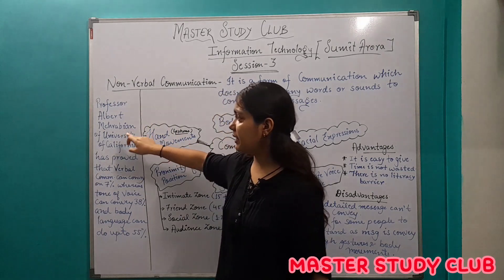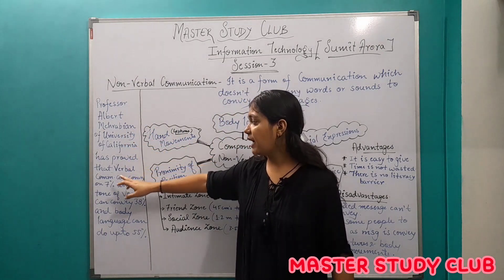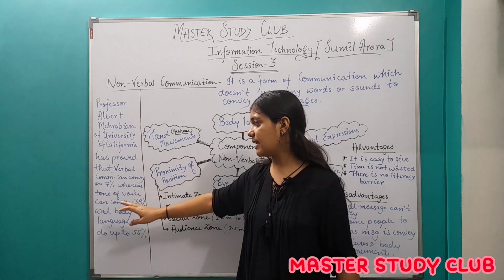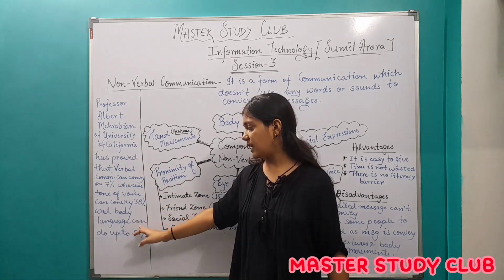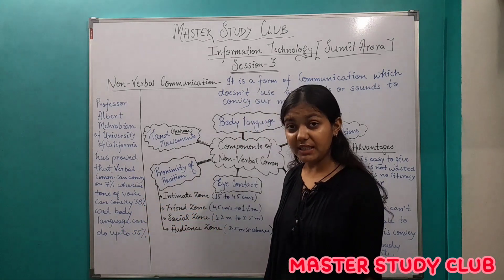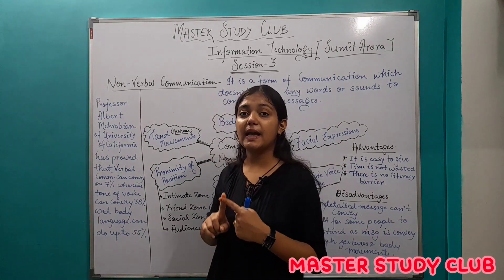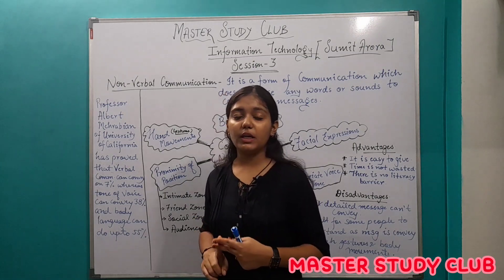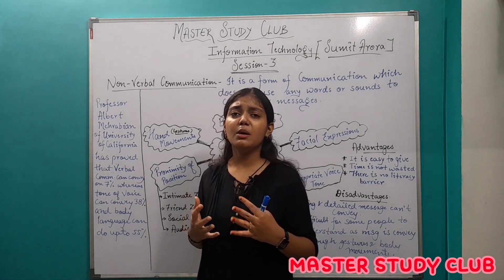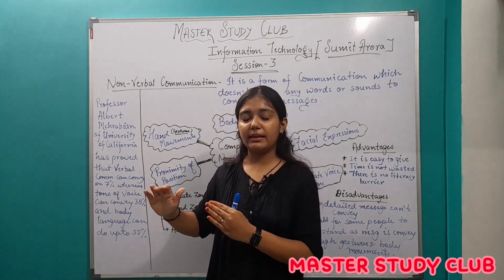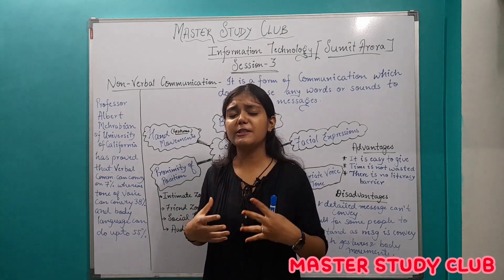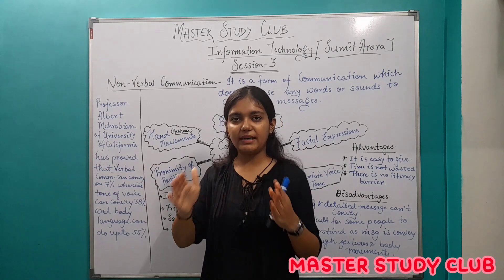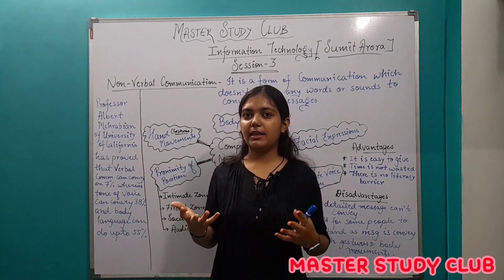Professor Albert Mehrabian of the University of California has proved that verbal communication can convey only 7%, whereas tone of voice can convey 38%, and body language can convey up to 55%. This shows that nonverbal communication is more important than verbal communication. People who are sad or struggling often cannot express their feelings through words and instead go silent and withdraw from society — which today is called depression.